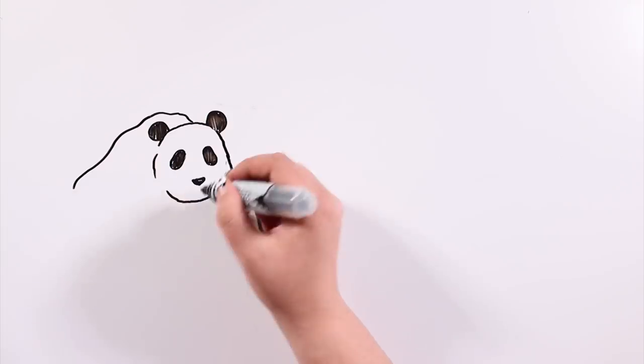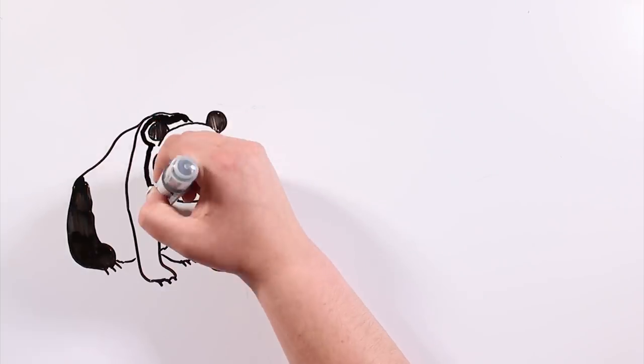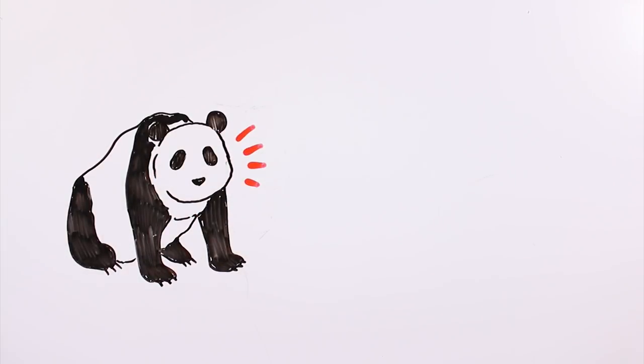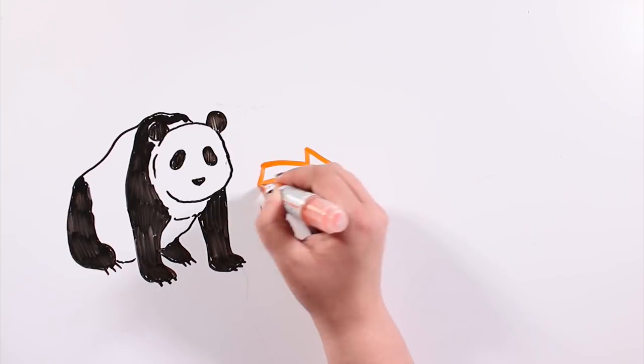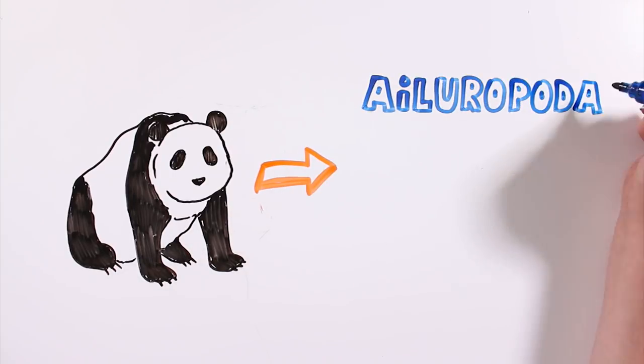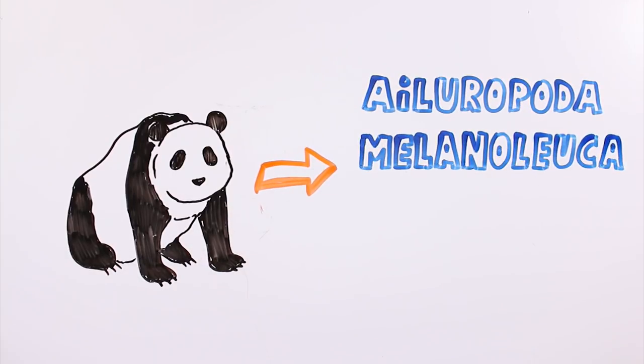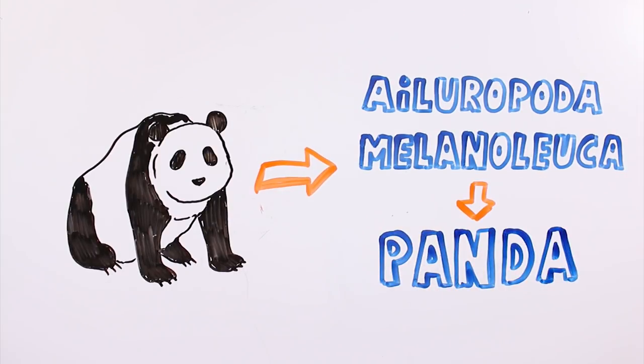Even though they are popularly known as panda bears, they are not really bears, but they are members of the same ursid family. Their scientific name is Ailuropoda melanoleuca, though we can also call them giant pandas.